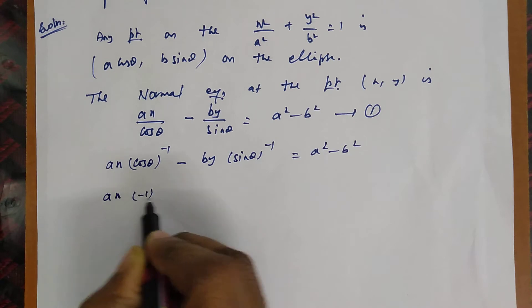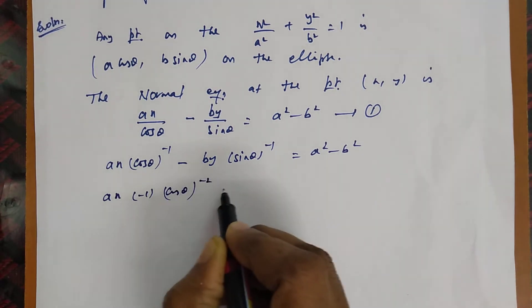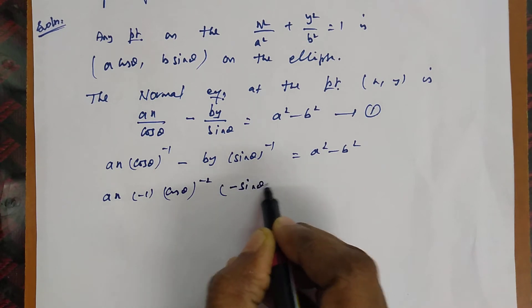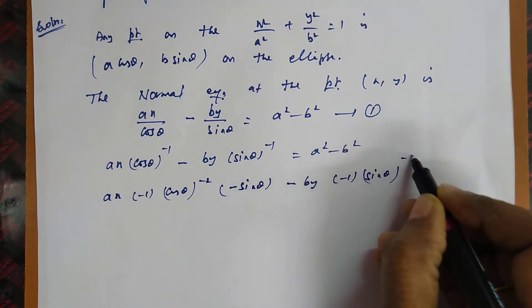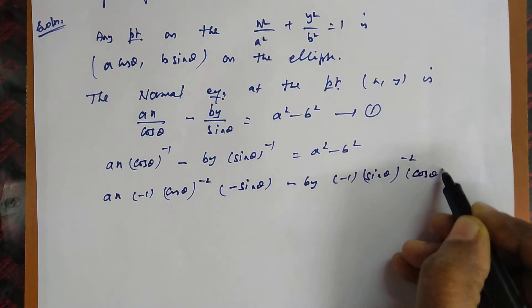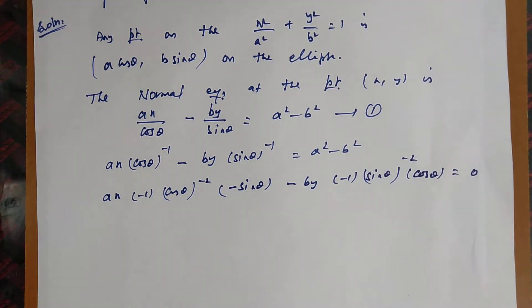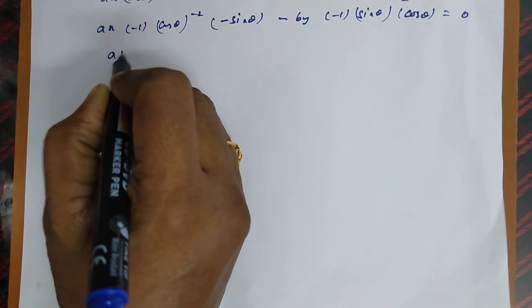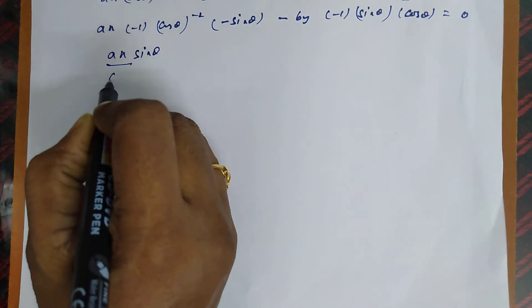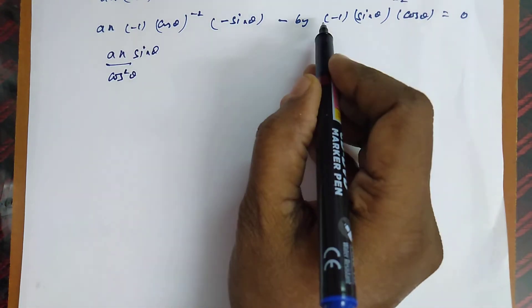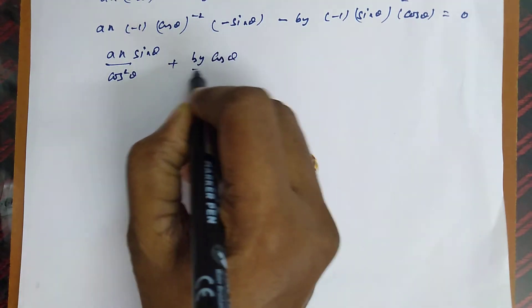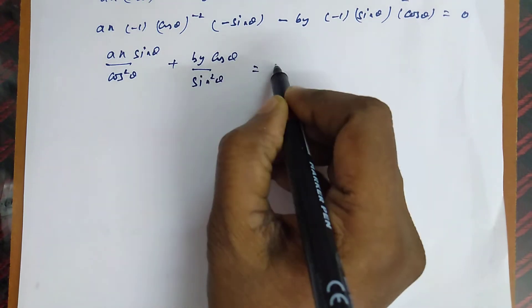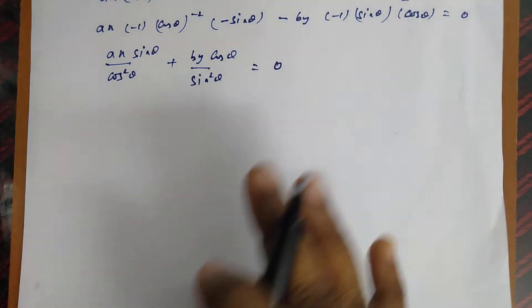Differentiating with respect to θ: ax · (−1) cosθ⁻² · (−sinθ) − by · (−1) sinθ⁻² · cosθ = 0, since a² − b² is a constant. The two negatives combine to give a positive, so this becomes: ax sinθ / cos²θ + by cosθ / sin²θ = 0.